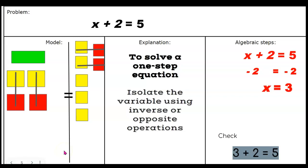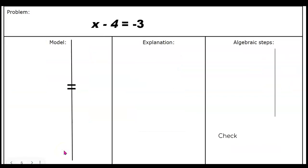Let's move on to the next one. Write down the problem: X minus 4 is equal to negative 3. Use your algebra tiles to try to model X minus 4 is equal to negative 3. Pause the video and come back to see if you're correct.